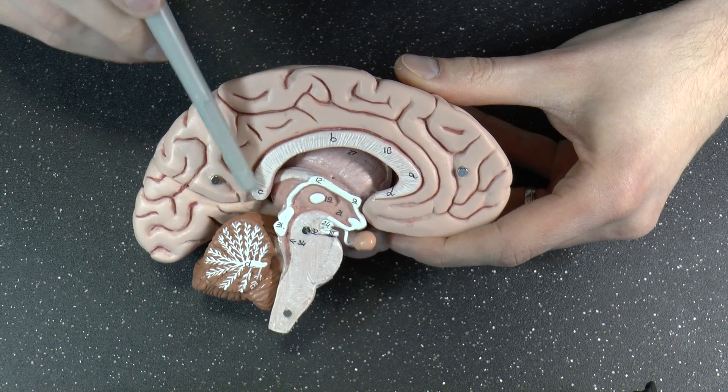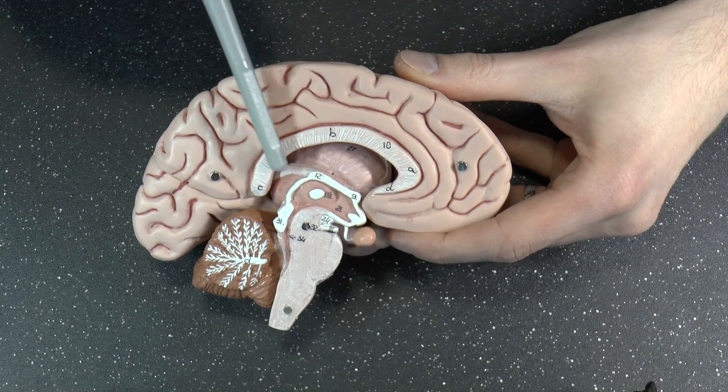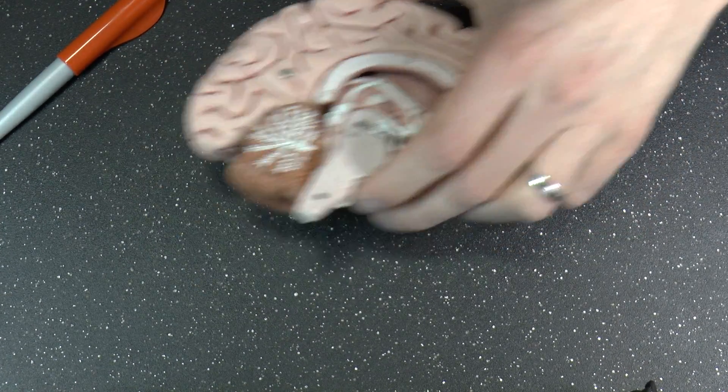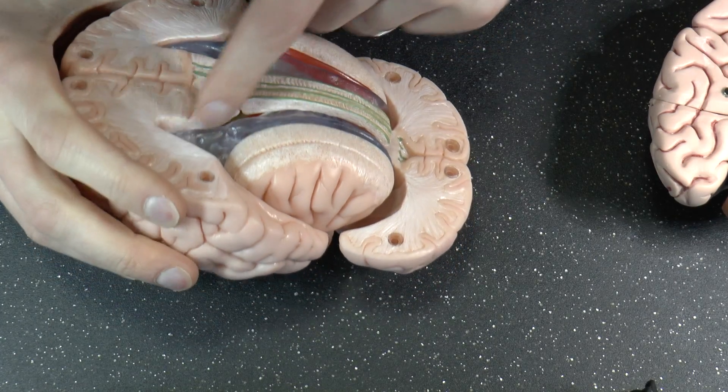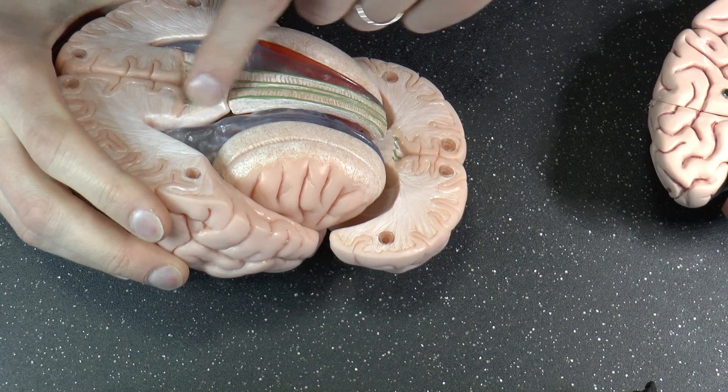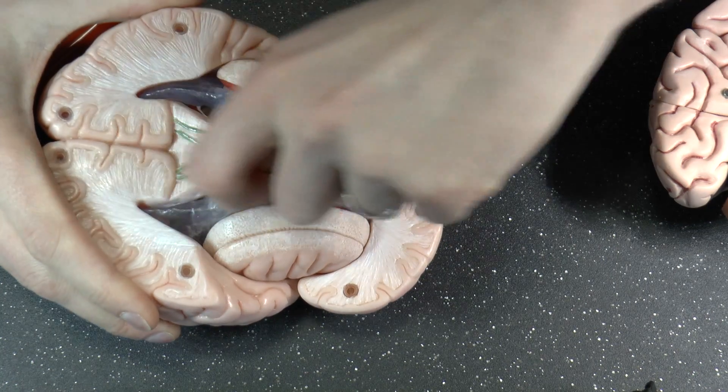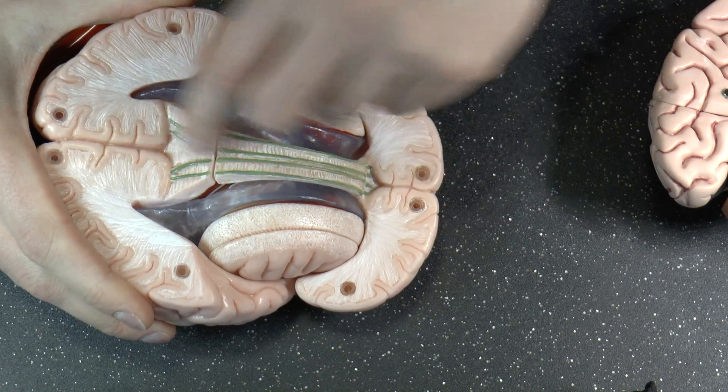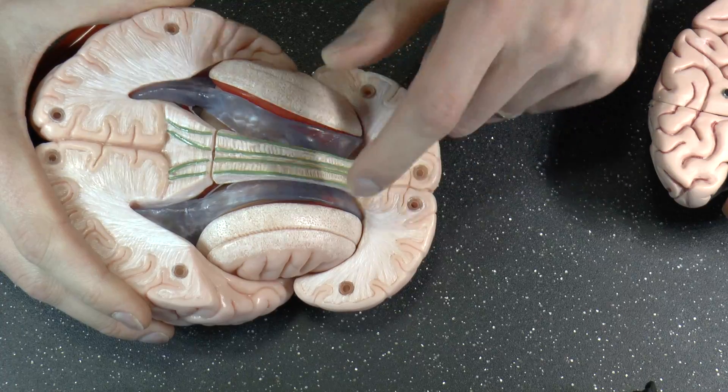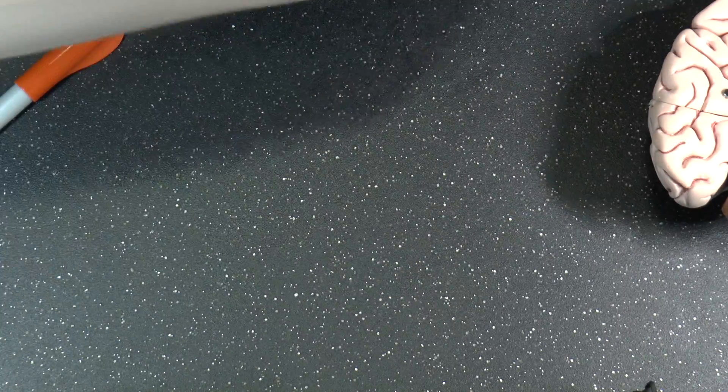And then you have the splenium, which means bandage, like a rolled-up bandage. And if you look again at this model, at the back, the bandage, you see it's kind of like a rolled-up bandage. It's much thicker and wider there. And then you kind of pull that, sort of uncoil that rolled bandage. And then you get the corpus callosum. Beautiful terminology.